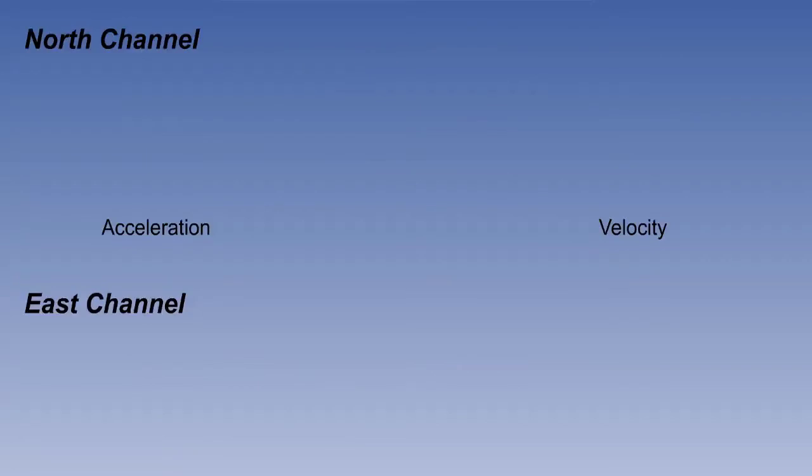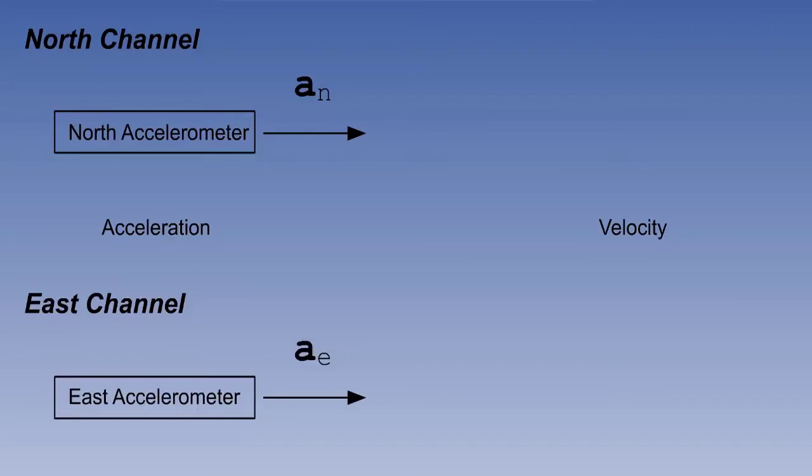The information flow in INS is organized into two channels, a north-south channel and an east-west channel. Each accelerometer senses accelerations, one in the north-south sense. These accelerations are labeled A subscript N. If the aircraft accelerates southwards, that is simply a negative north acceleration. The other accelerometer senses its accelerations in the east-west sense, labeled A subscript E. If the aircraft accelerates westwards, that is simply a negative east acceleration.